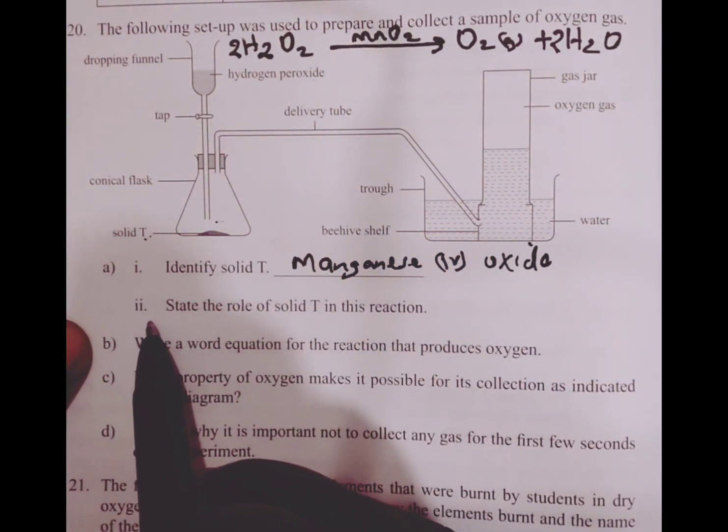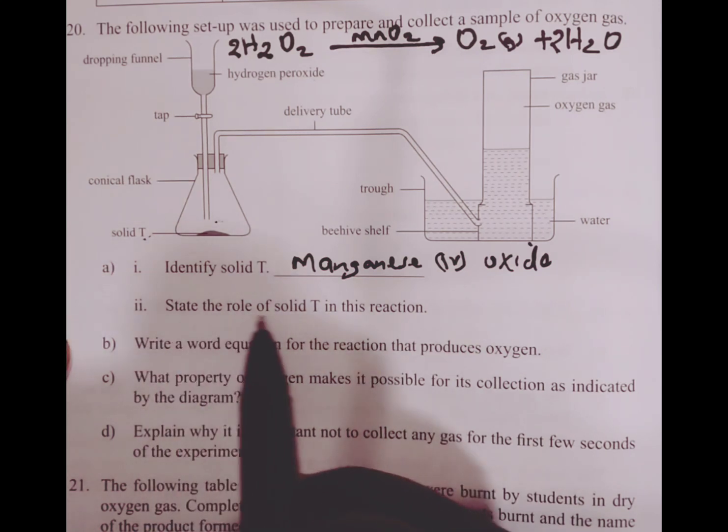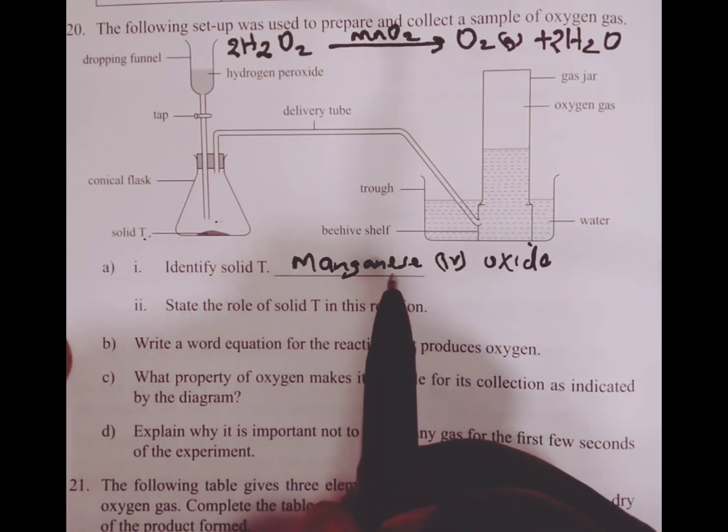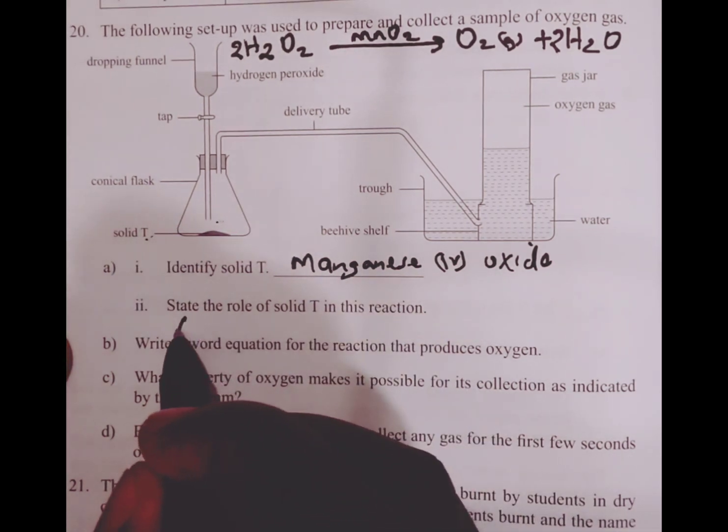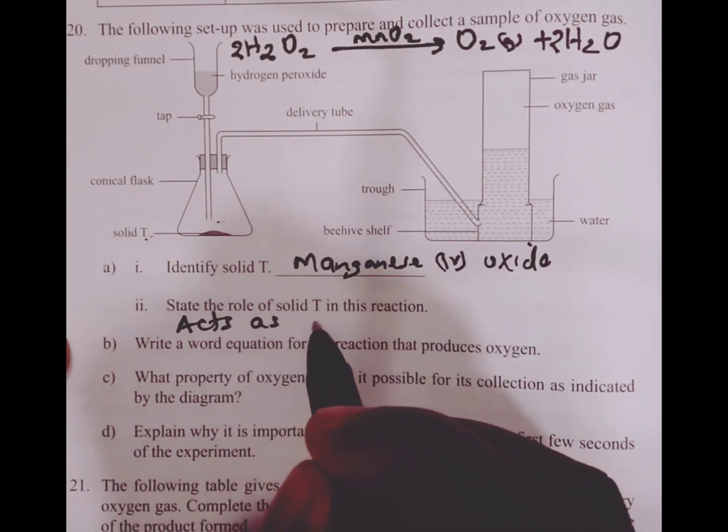Part A Roman 2 states the role of solid T in the reaction. Solid T, which is manganese(IV) oxide, acts as a catalyst.